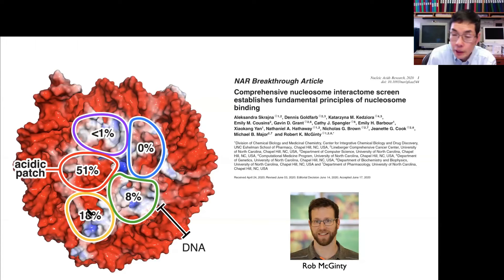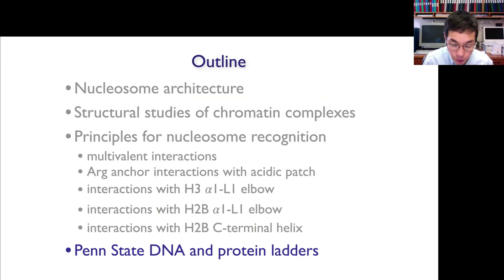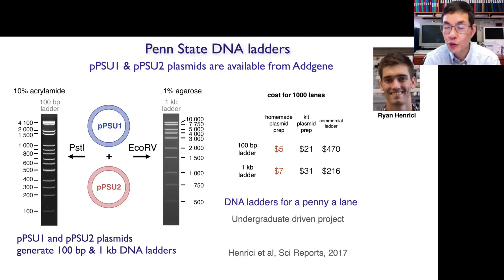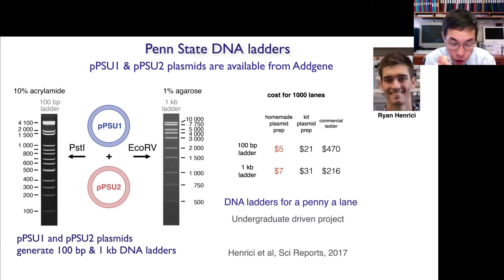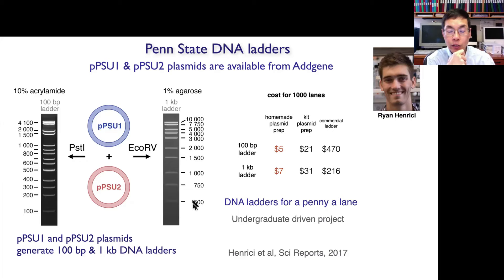I've got a couple minutes left and I'd like to switch gears to tell you about some reagents we've made. We have great undergrads at Penn State. Quite a few years ago, since we were making lots of DNA for nucleosome preps, I had this idea for making DNA ladders — really executed by Ryan Henrici in the lab. The idea: two high-copy-number plasmids, one digested with one enzyme gives a 1 kb ladder, another enzyme gives a 100 bp ladder. If you want a 1 kb ladder covering 1-5 kilobases, that's only 15 kb total, which is why we use two plasmids.